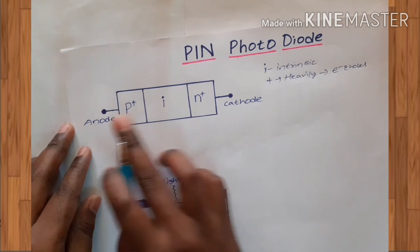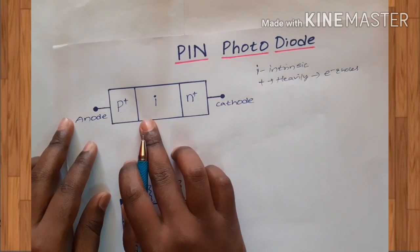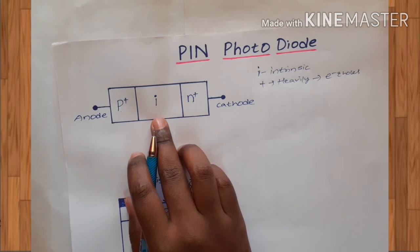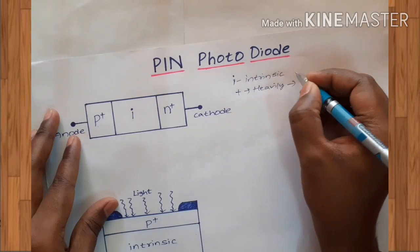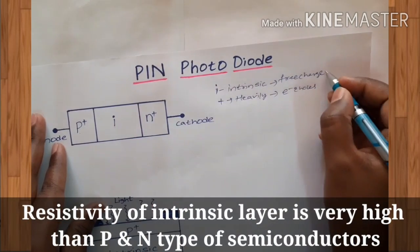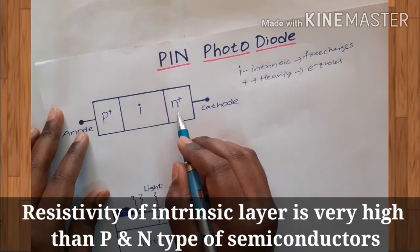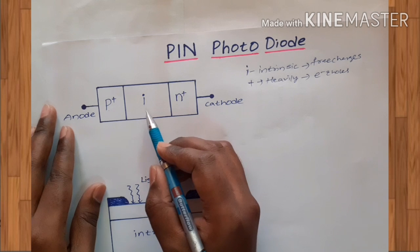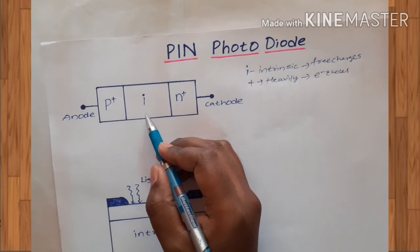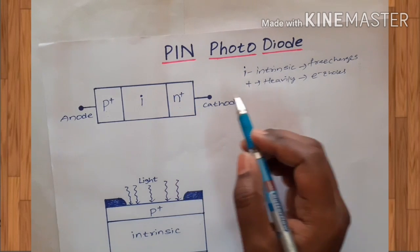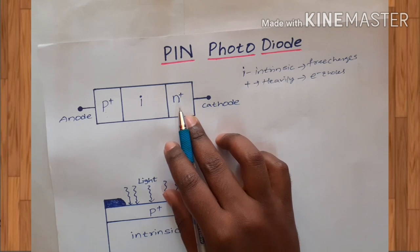In this device structure, the P terminal acts as the anode and the N terminal acts as the cathode. In a PIN diode, an intrinsic layer — which is the pure form of semiconductor — is sandwiched between two heavily doped P and N type semiconductors. This intrinsic layer has no free charge carriers, meaning its resistivity is very high, while the resistivity of the P and N type semiconductors is very low.